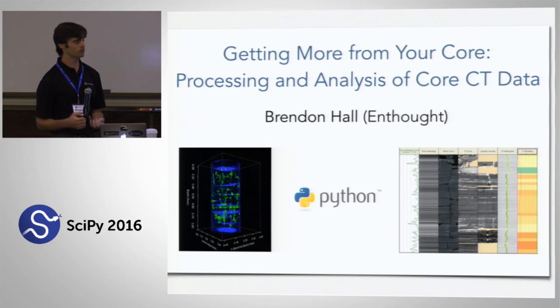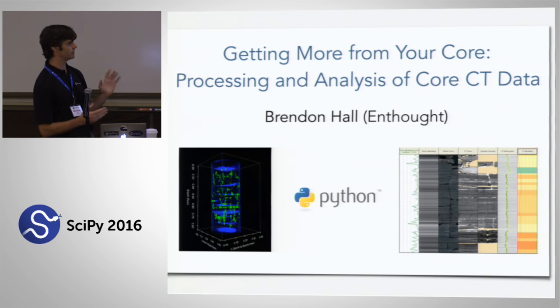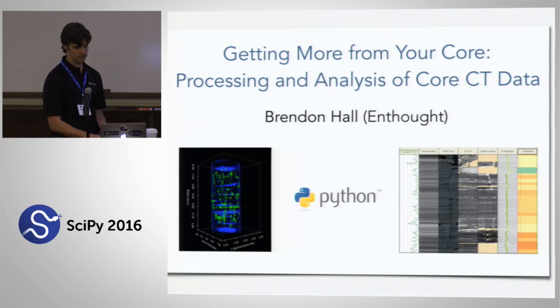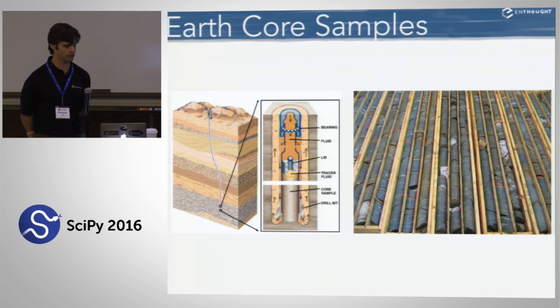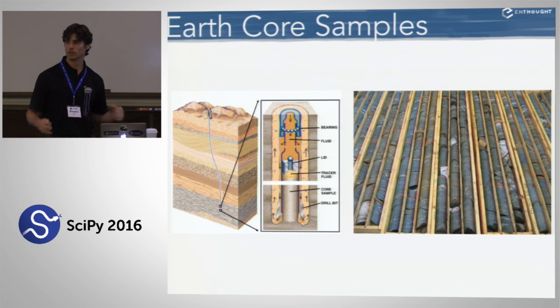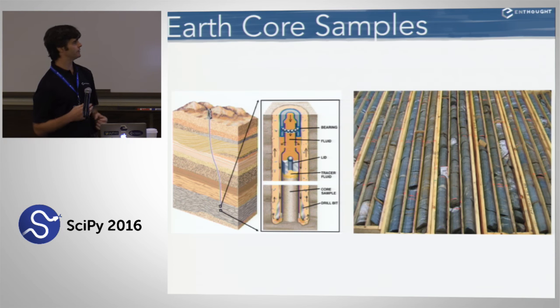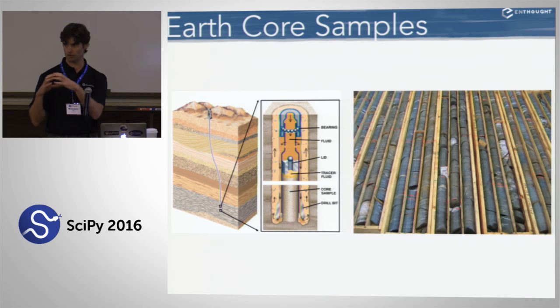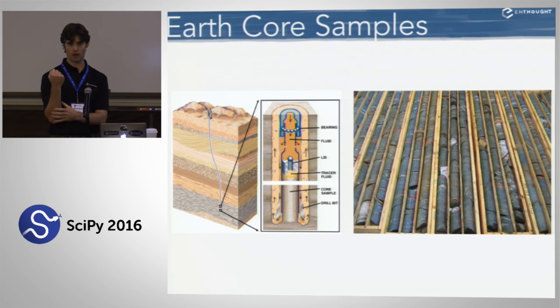Although the software is dominantly written in Python using the Python ecosystem, before I get too far — because I don't know if everyone in this room is a geologist; I'm used to talking to crowds of geologists — I'm going to define what core I'm talking about and a little bit about what CT data is. So the core I'm talking about are earth core samples: cylindrical sections of rock that are extracted from the earth during specialized drilling operations. They use a special cylindrical hollow drill bit to drill down and drill around a rock sample that goes inside the hollow part of the drill bit, and they can extract it.